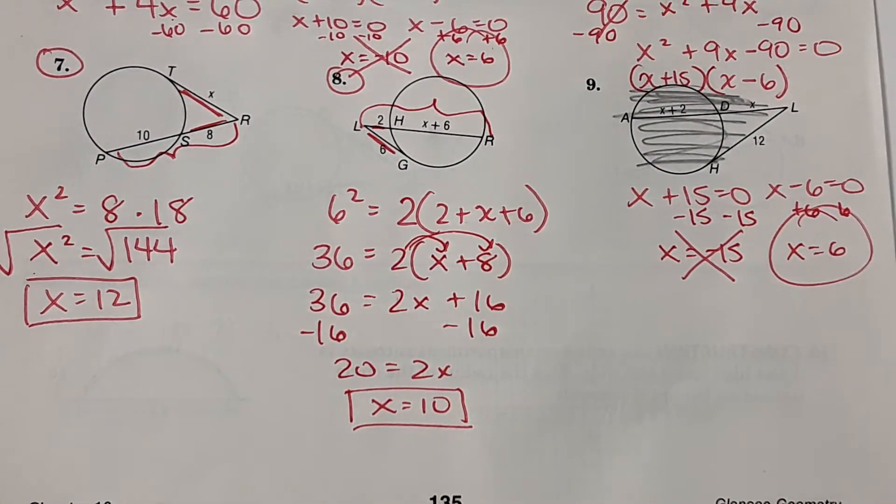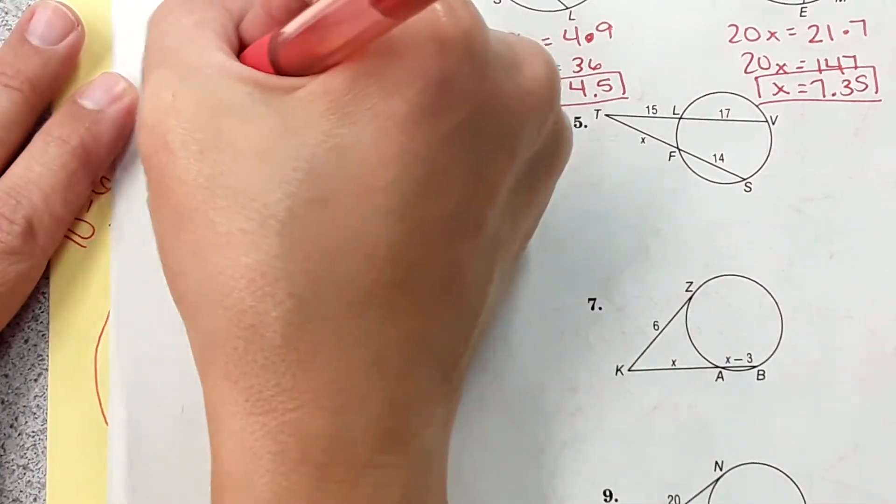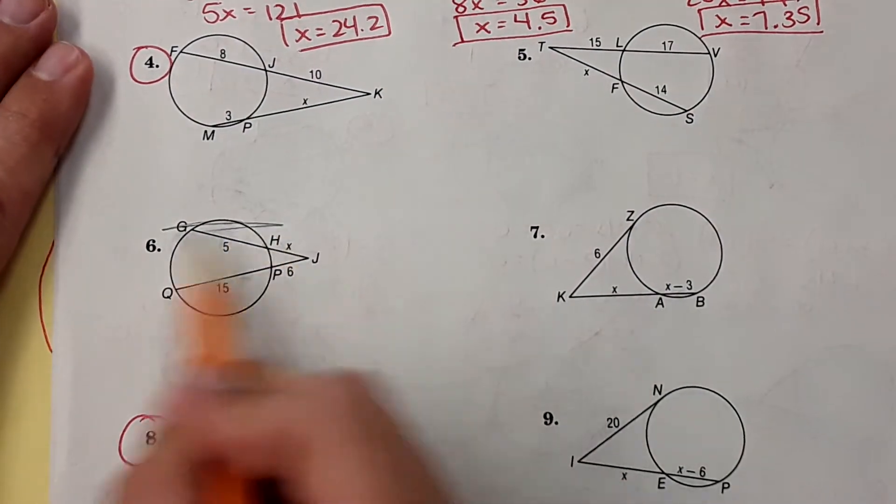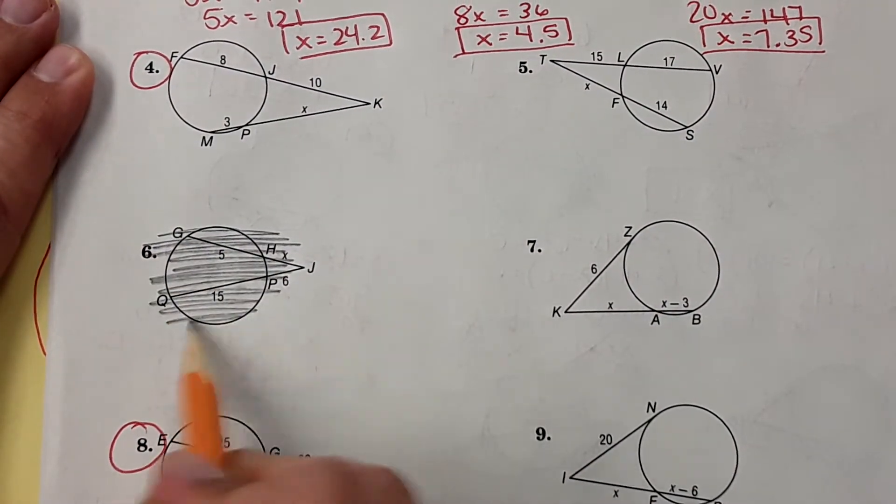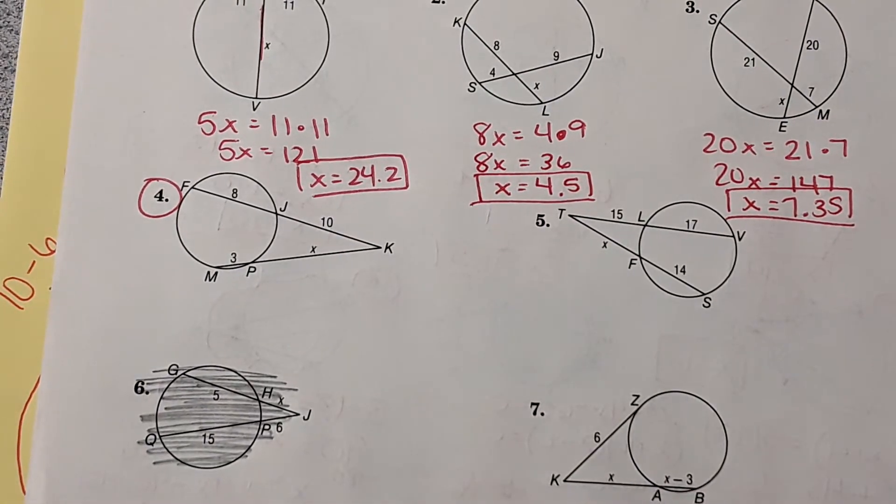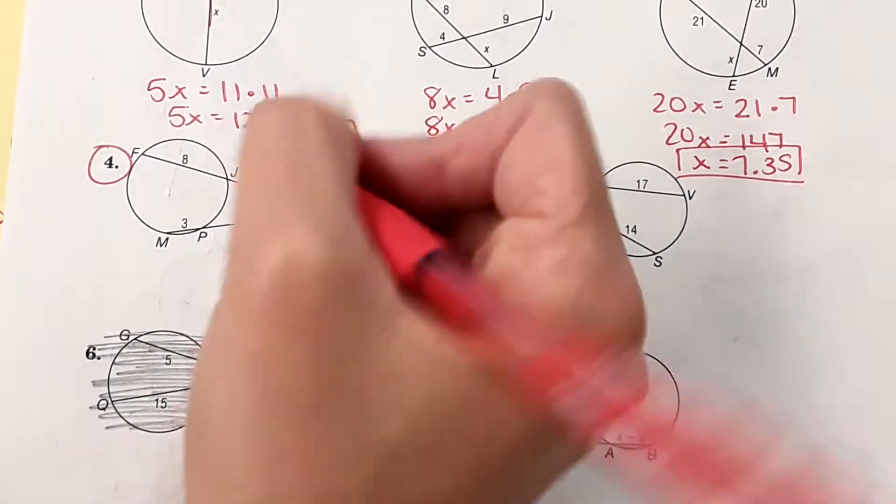And then we're going to do a couple more on the back. We're going to do number 4 and number 8. You can just cross out number 6 and use that room if you need to. So number 4 is one of the ones where we're factoring again. Let's just practice it one more time.